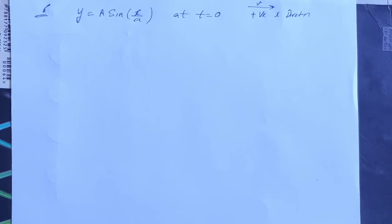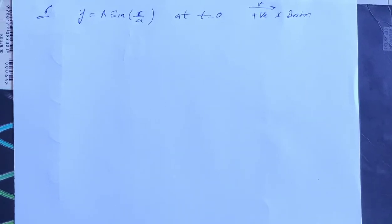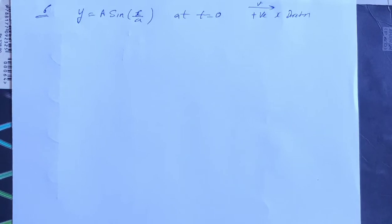SC Vema Solution Chapter 15 Wave Motion and Wave on a String Question No. 6. A wave pulse is travelling on a string with a speed v toward a positive x direction.